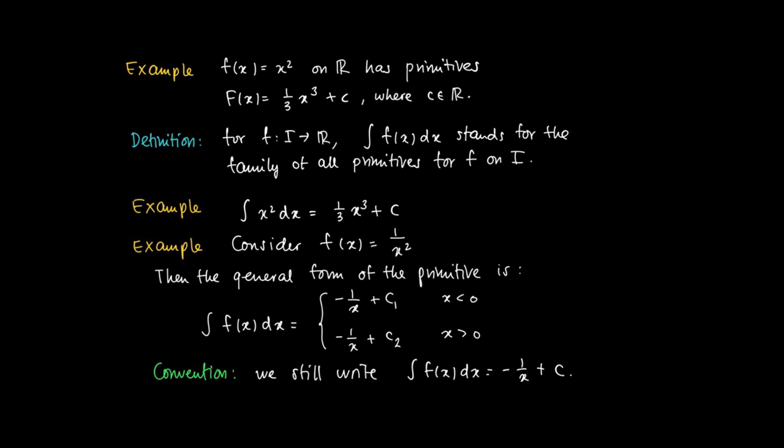Under this convention, the c means two different things. You have to think of it yourself that -1/x is a primitive of 1/x², and the domain is split up, so that on the left of 0, on the negative part, you can take a different constant than on the right-hand side, the positive side of 0.